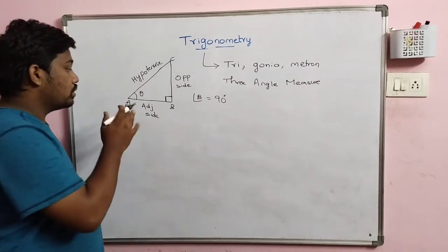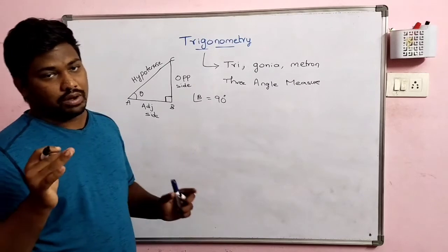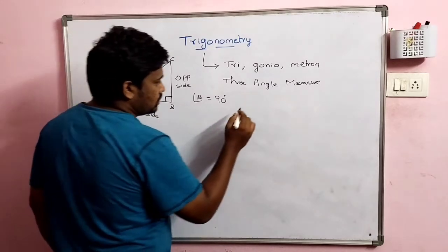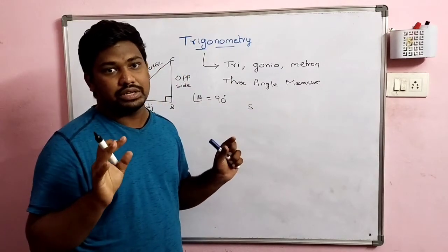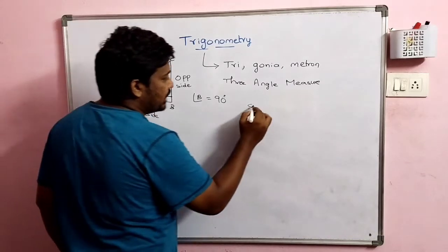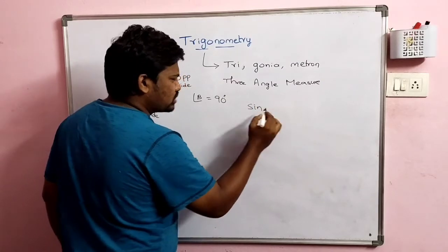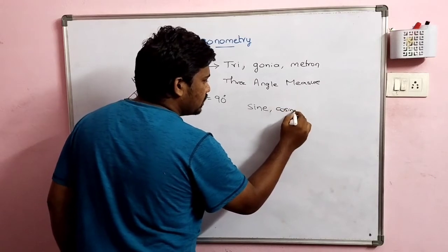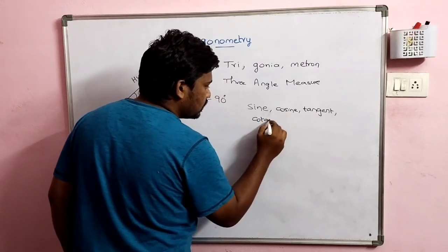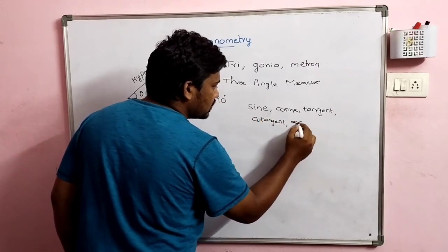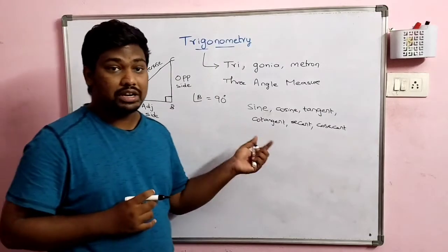Now in trigonometry, various ratios are formed. In total, six trigonometric ratios are formed. The six trigonometric ratios are: sine, cosine, tangent, cotangent, secant, and cosecant. These are the six basic trigonometric ratios.